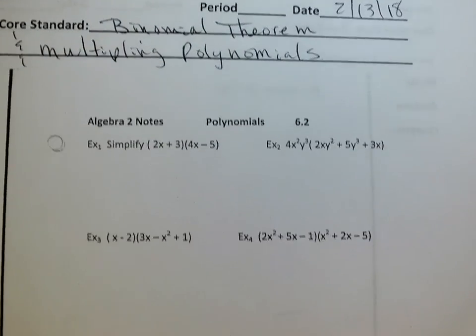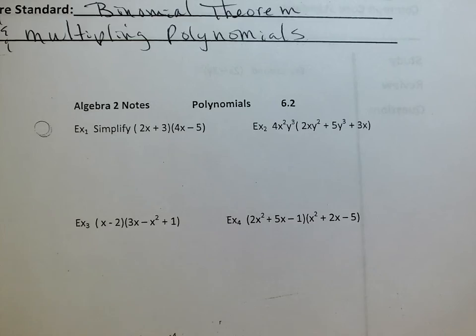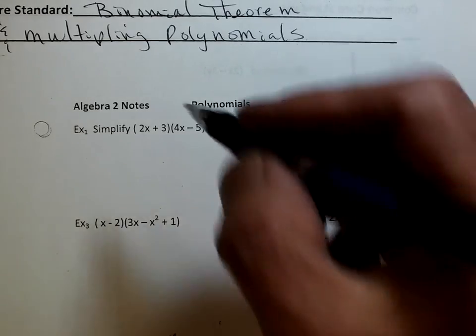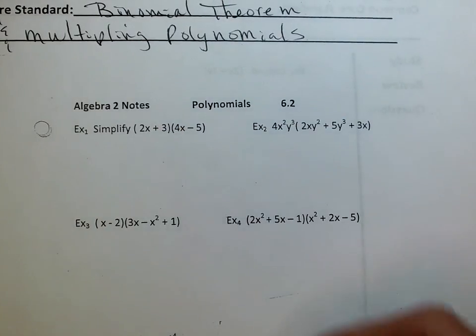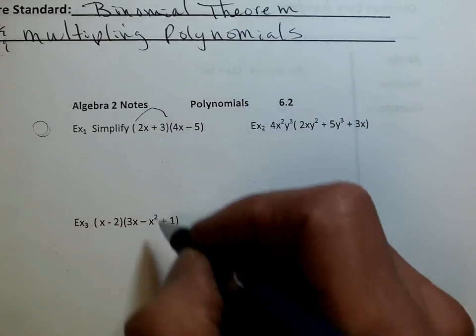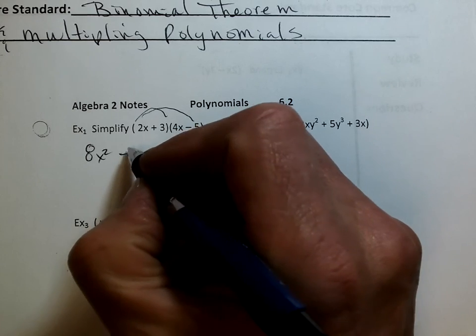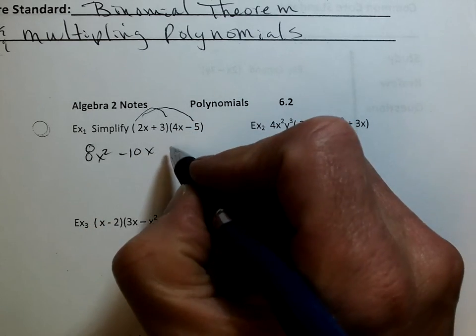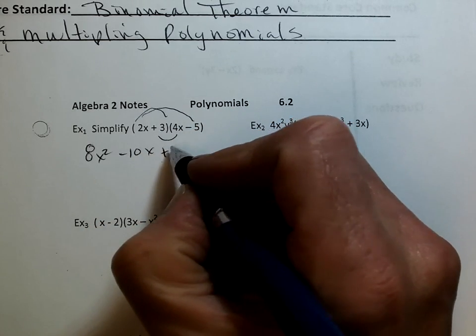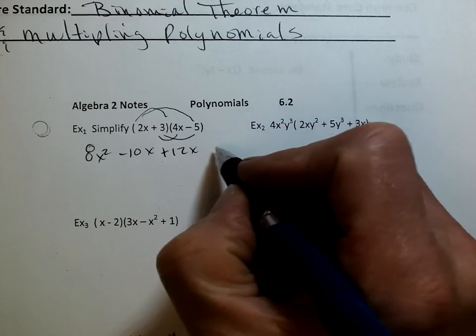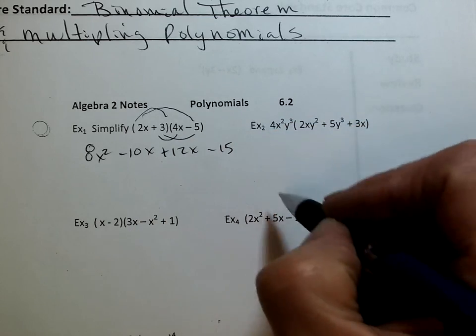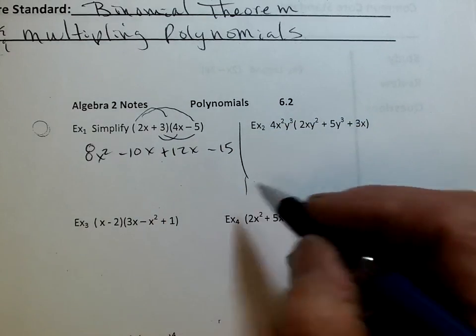So the first one's easy. Let's just FOIL. We know x times x is x squared. Let's do a little bit of review to get us into the hard stuff. So, 8x squared minus 10x plus 12x minus 15. I'll let you catch up with me.